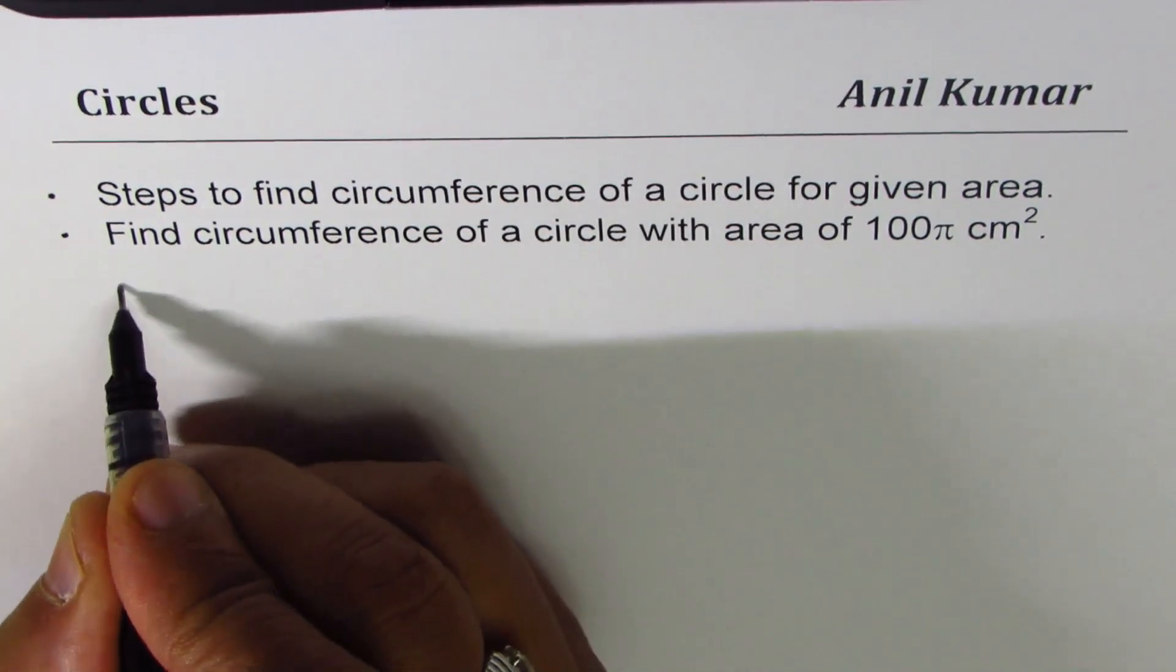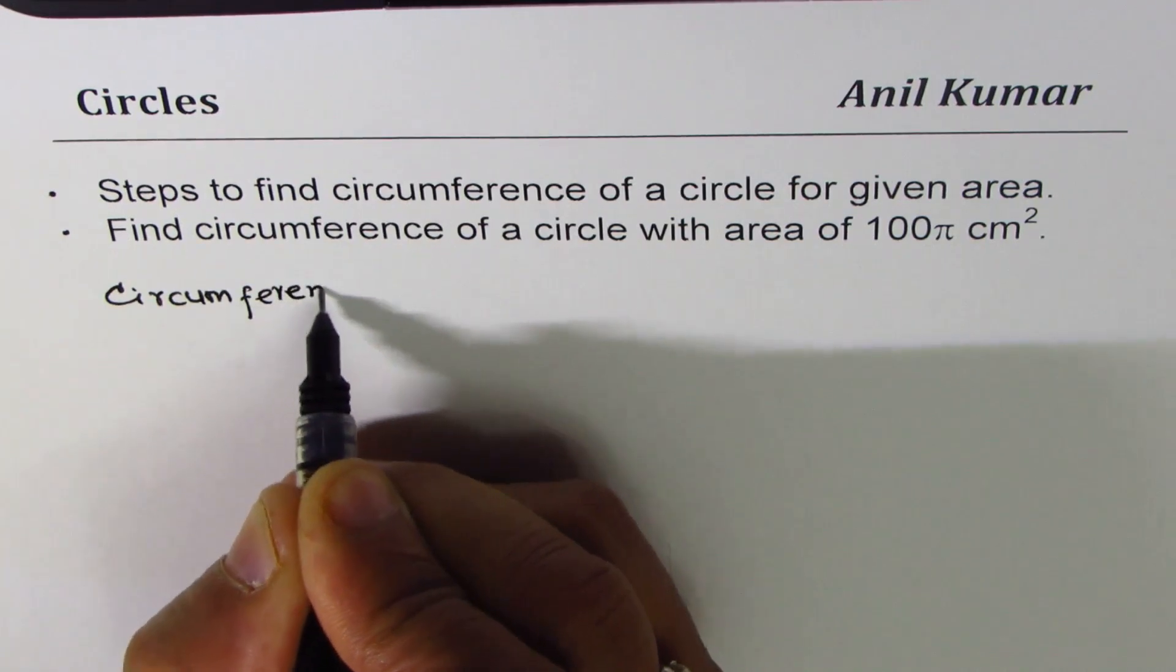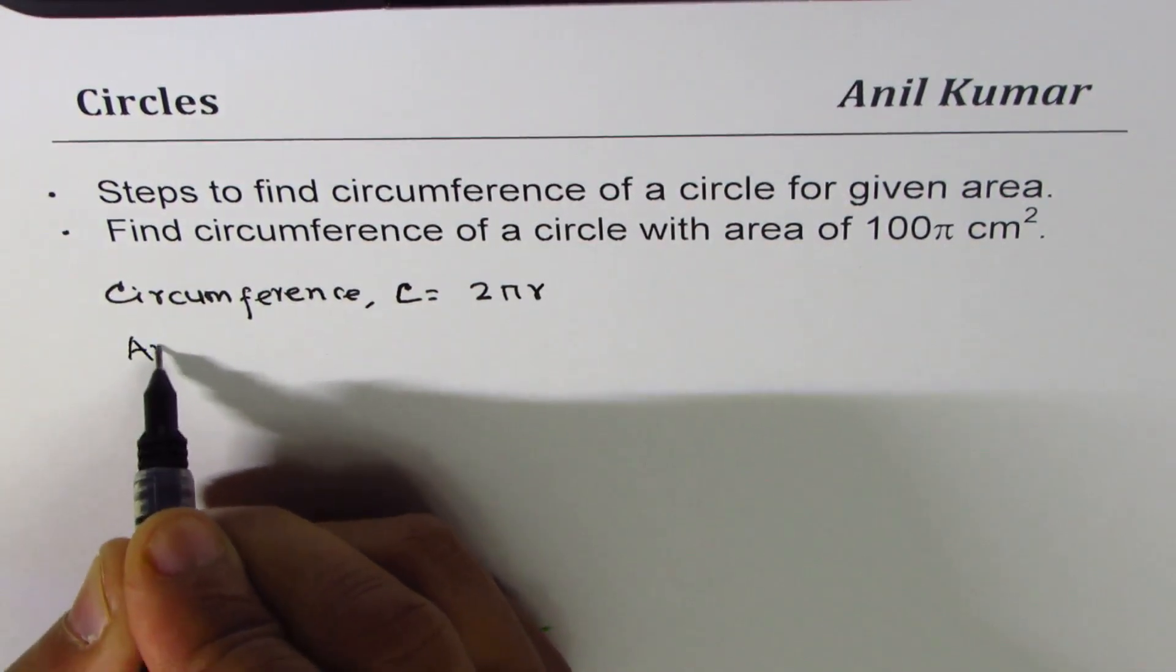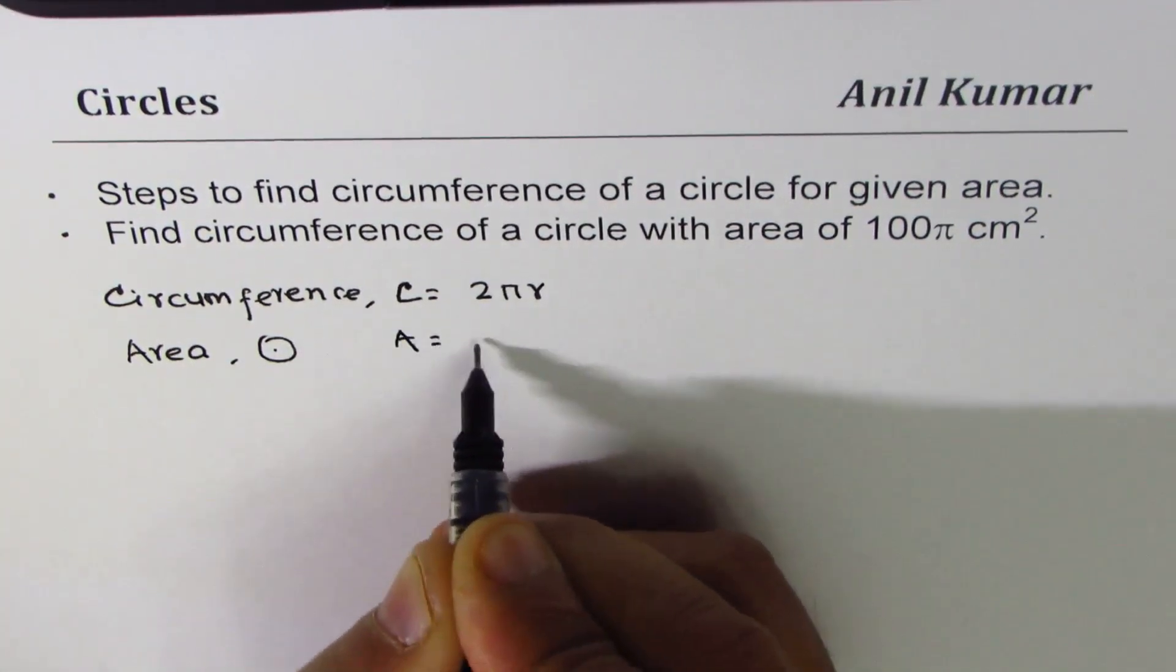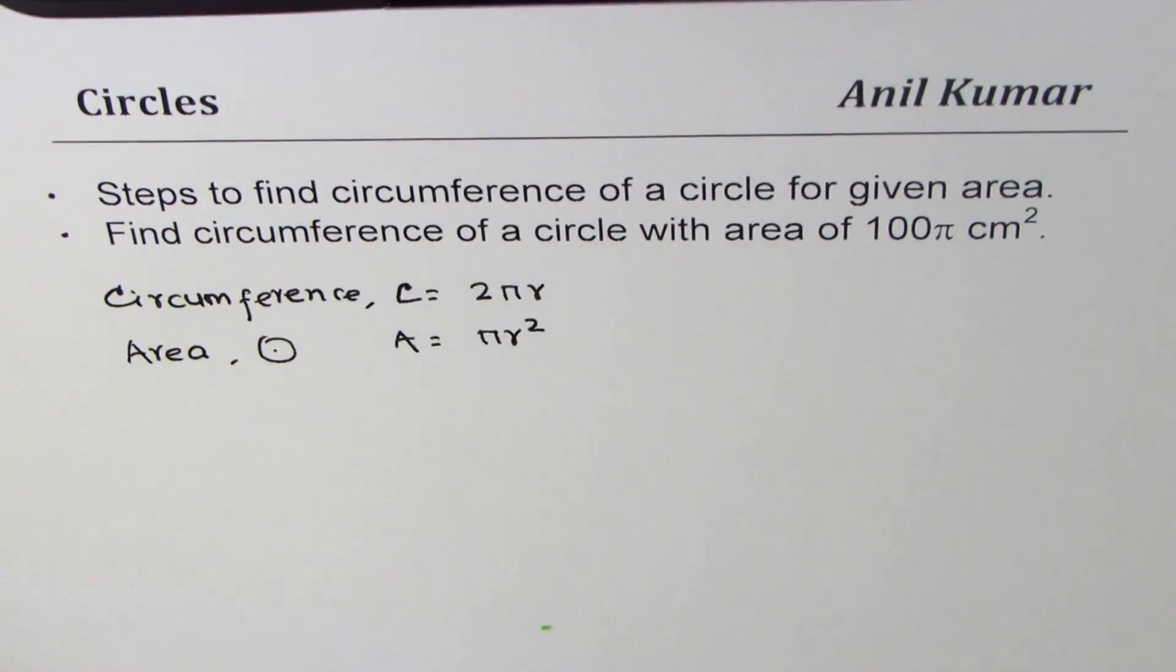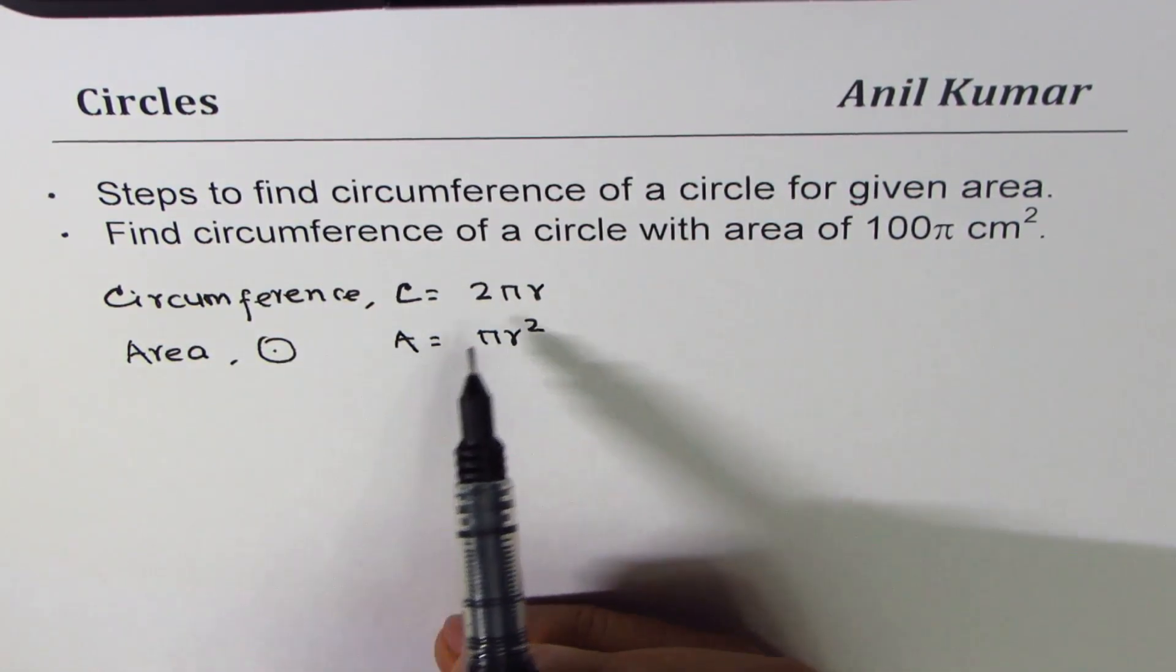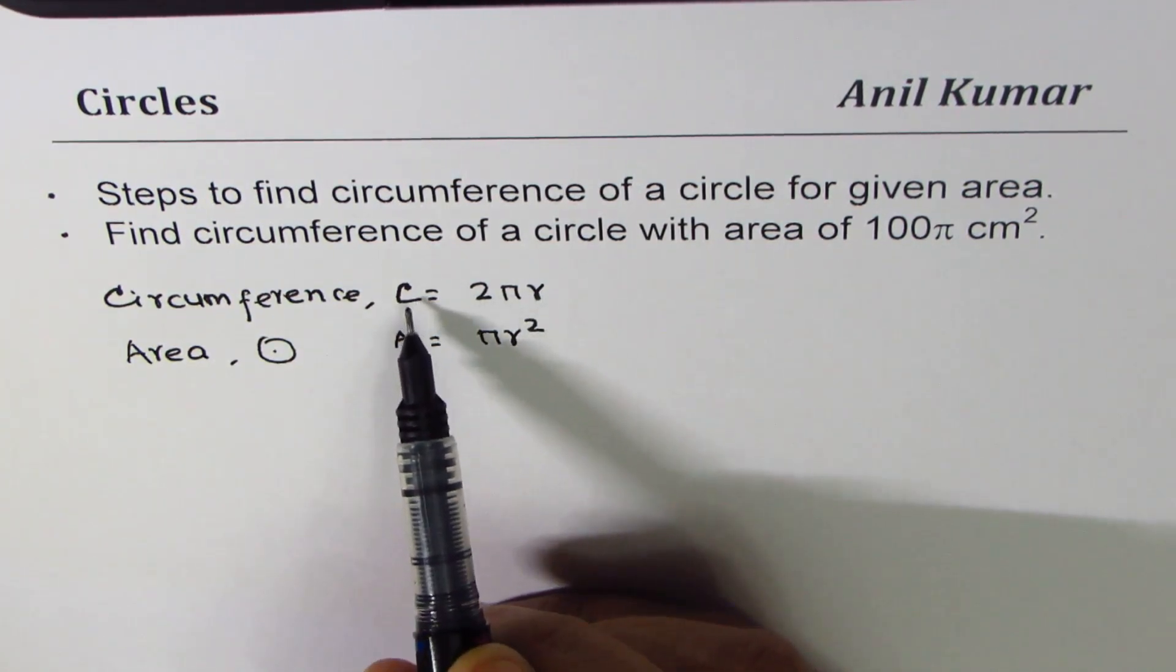So as you know, circumference of a circle is c = 2πr and the area of a circle is A = πr². Now both of them have r in common. So what we can do is we can write r in terms of A and replace it in the equation for circumference, relating circumference with area.